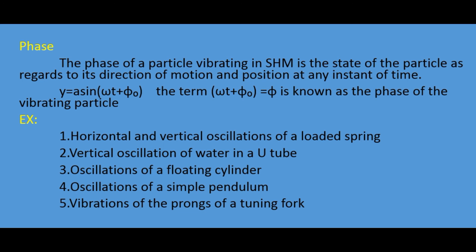Examples of Simple Harmonic Motion include: horizontal and vertical oscillation of a loaded spring, vertical oscillation of water in a U-tube, oscillation of a floating cylinder, oscillation of a simple pendulum, and vibration of the prongs of a tuning fork. These are the examples of Simple Harmonic Motion. Thank you.